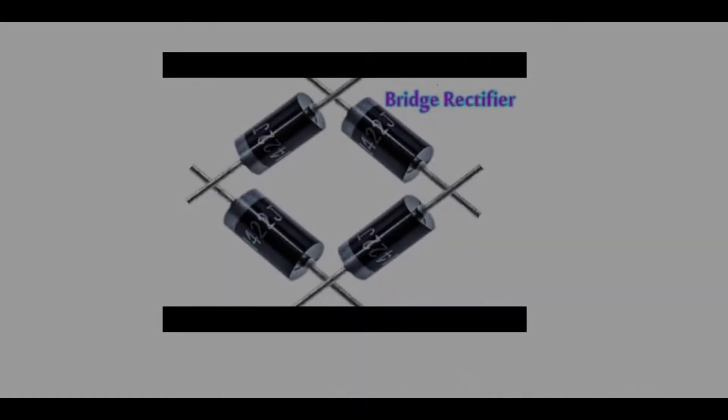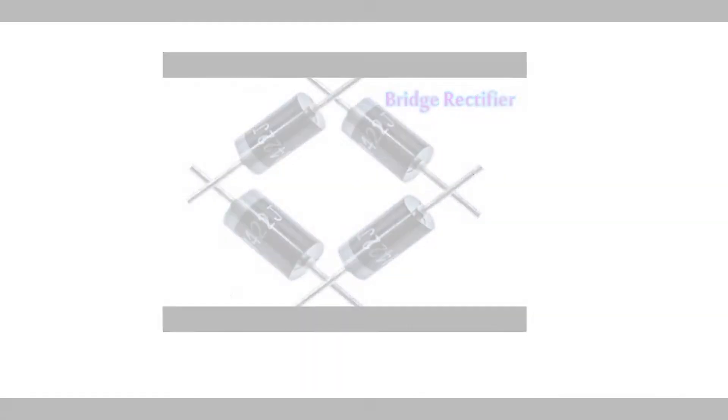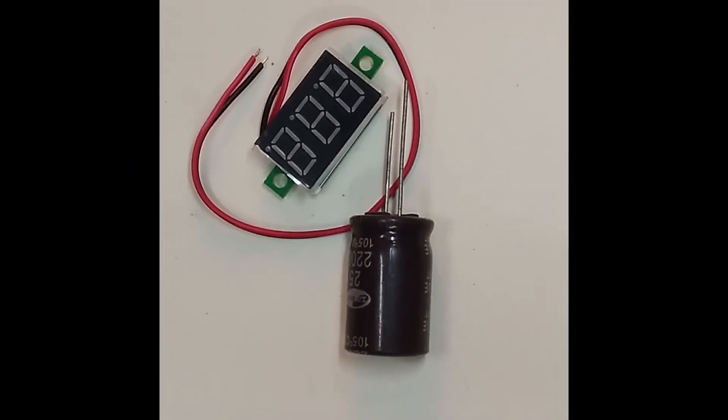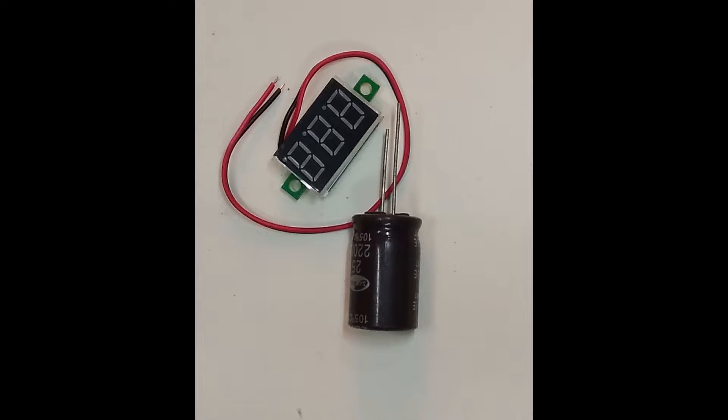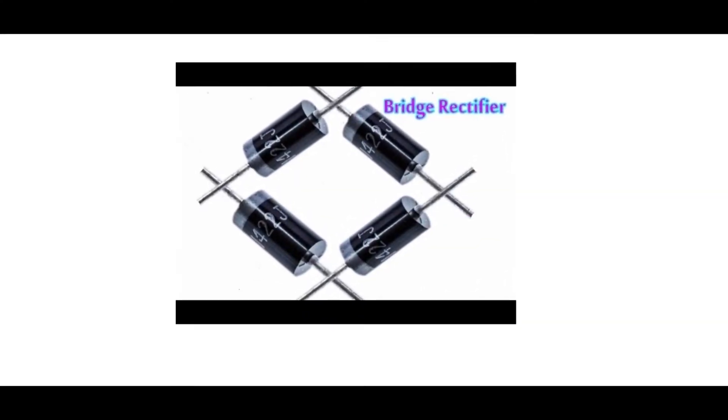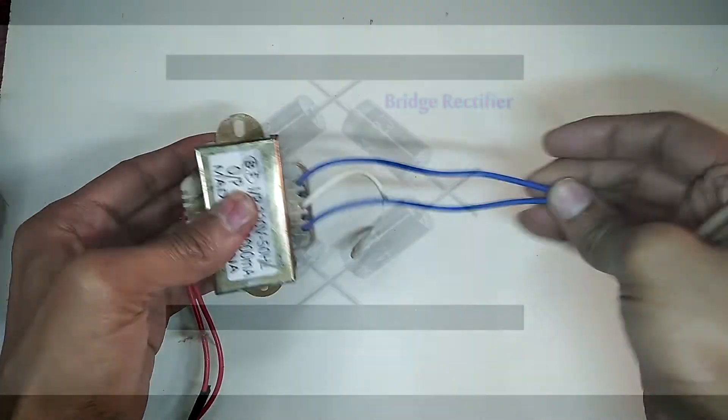For producing 24 volt we need bridge rectifier and a capacitor for making our pure DC. This is the diagram of a bridge rectifier. For making bridge rectifier we need 4 diodes. Watch this video, I will give all the diagrams.